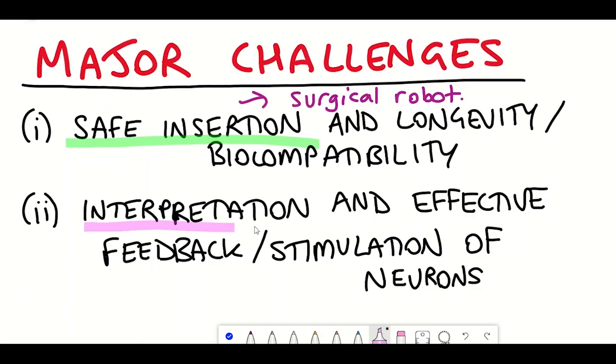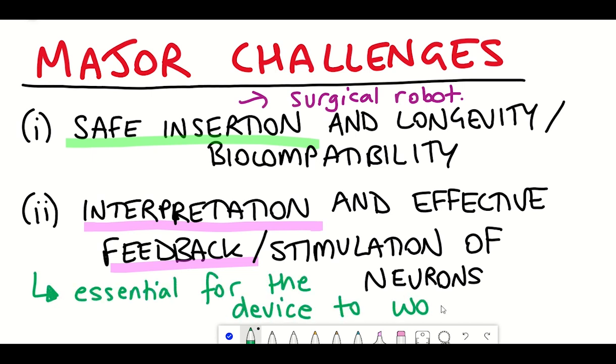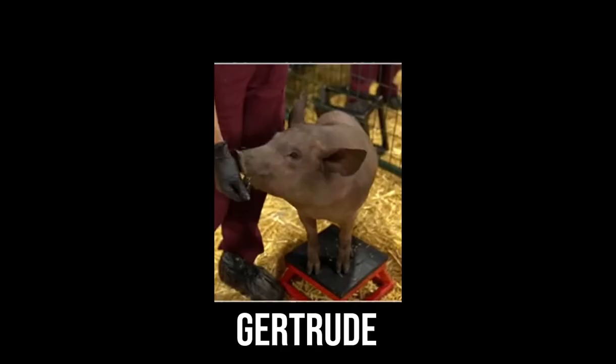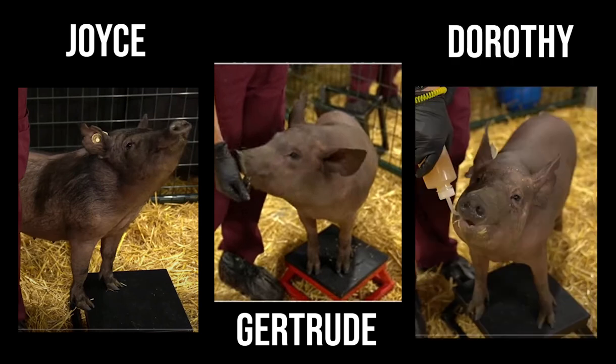And so the second challenge of being able to interpret and understand these signals comes down to do these link devices actually work? And so this question was raised in the new update conference. And we're introduced to three little pigs, Gertrude, Joyce and Dorothy. And so the difference between these pigs is the fact that Joyce didn't receive any implants, whilst Gertrude did. And Dorothy is, I suppose, the most intriguing and interesting update to come from this announcement. She was actually given one of the implants, but later on, it had the implant removed. And so this demonstrates the reversibility of these devices.